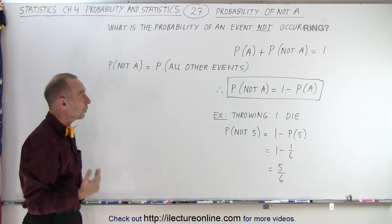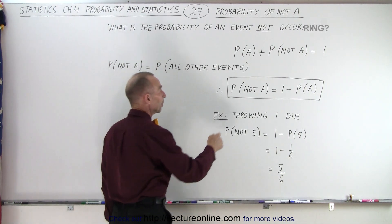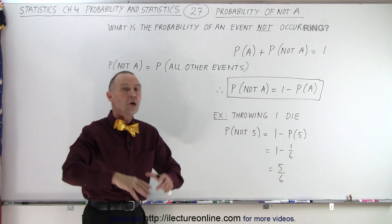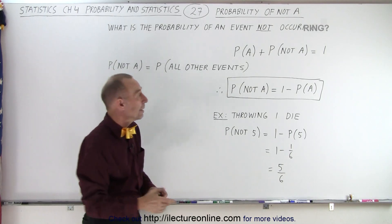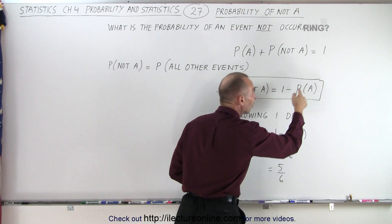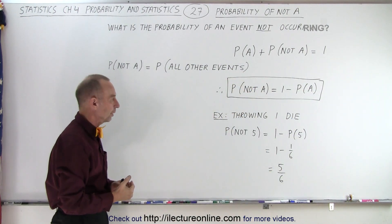And so therefore, what we then do is we can write that the probability of not A is equal to 1, which represents the probability of all events occurring, including A, minus the probability of A occurring, which then leaves us the probability of all other events occurring.